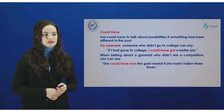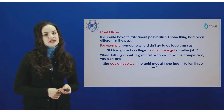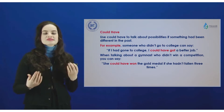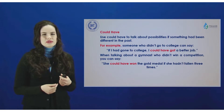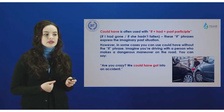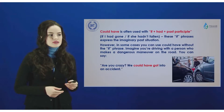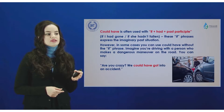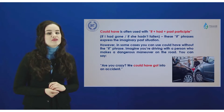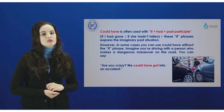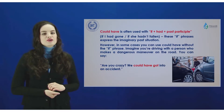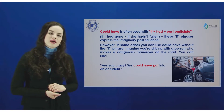Could have can also refer to the past — you're talking about a general situation. You do not mean something particular, just something in general. If plus had plus past participle is the structure of the third type of conditional sentences. That's why when you regret about something, or when you characterize the third type of conditionals, you may say that something happened in the past.